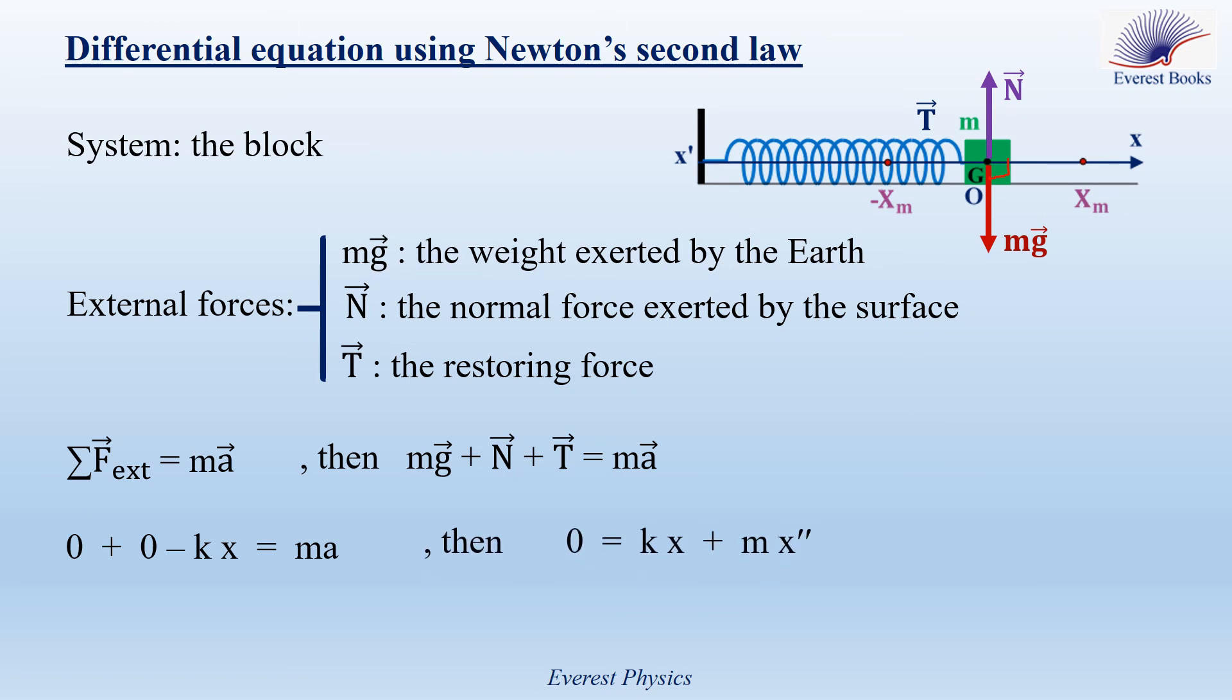Take minus K x to the right side of this equation. It becomes plus K x. And we know that A is equal to x double prime. Then, we have zero equal K x plus M x double prime. Dividing by M both sides, we get the final equation, which is the second order differential equation, x double prime plus K over M x is equal to zero.